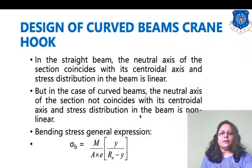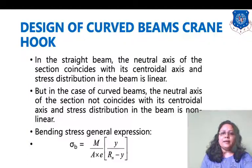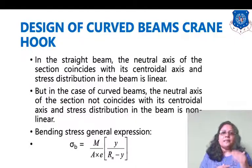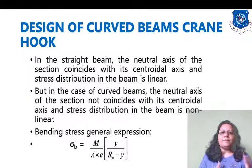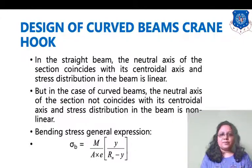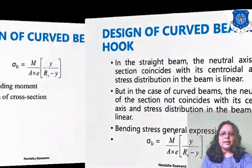In this formula, M indicates bending moment. A is the area of the cross-section, which will be different for different section shapes — for example, square, circular, or trapezoidal — so the area depends on the type of section.